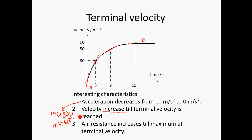To summarise: acceleration decreases means the increase in velocity decreases. The velocity increases at a decreasing rate until it reaches terminal velocity, where it becomes constant. Finally, air resistance increases to a maximum at terminal velocity, and this maximum is actually equal to the weight of the object. That's all for the topic of terminal velocity — I hope this helps you understand better. Thank you and have a nice day.